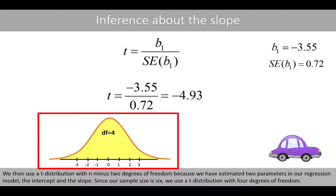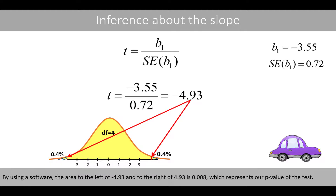We then use a t-distribution with n minus 2 degrees of freedom because we have estimated two parameters in our regression model: the intercept and the slope. Since our sample size is 6, we use a t-distribution with 4 degrees of freedom. By using software, the area to the left of negative 4.93 and to the right of positive 4.93 is 0.008, which represents our p-value of the test.